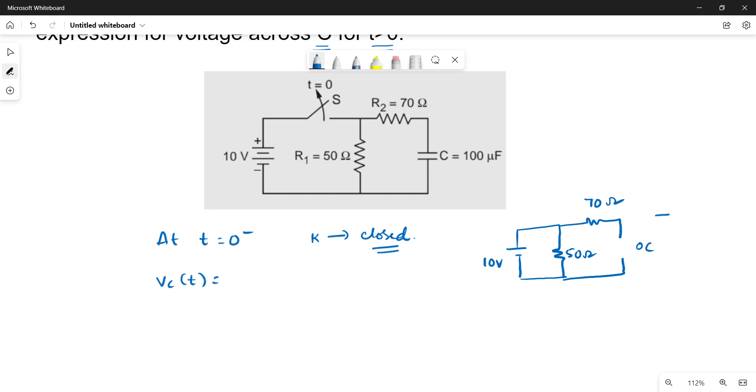So that means voltage across the capacitor, if we consider that voltage as Vc of t, is simply 10 volts.